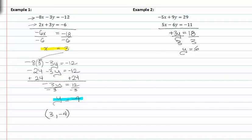I can then take six and plug it into either one of my original equations. I'll pick the first one. Negative five x plus nine times six equals twenty nine. Negative five x plus fifty four equals twenty nine. Subtracting fifty four from both sides gives me negative five x equals negative twenty five.